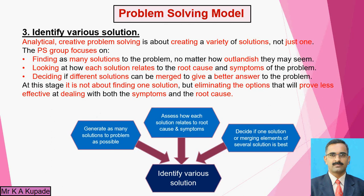This is the second step. After the first and second steps — that means understanding or defining exactly the problem, its observation, its diagnosing, its symptoms — you have to gather the information. And after gathering the information, you have to see which kind of solution it will consider for that particular problem. So here, the third step is to identify the various solutions. The analytical or creative problem solving is about creating a variety of solutions — it is not considering only one solution, it gives a variety of solutions. By considering the problem, we have to consider some n number of solutions.